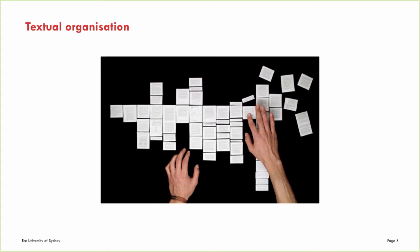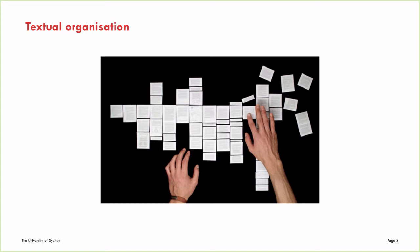You cannot simply start writing without a plan. To create this plan or outline, there are several options available. Your ideas can be organized using different patterns or schema. There are two main types of schema that we need to distinguish: natural or real-world schema and artificial or interpretive schema.